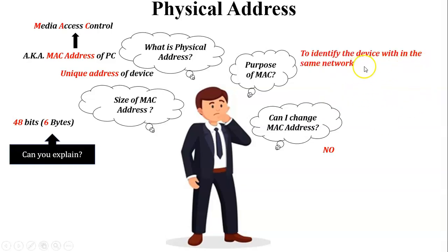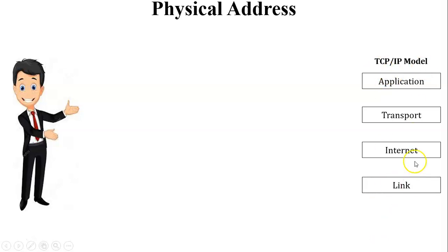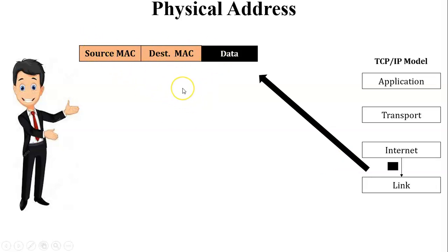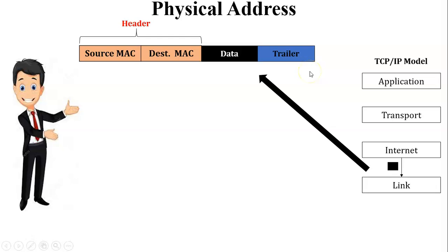What is the purpose of the MAC address? The purpose of the MAC address is to identify a device within the same network. If both devices are on different networks, we cannot use the MAC address. In the TCP/IP model, when data passes from the internet layer to the link layer, at the link layer the source MAC and destination MAC are added as a header before the data. Inside the trailer, flow control bits, error control bits, and access control bits are added, as these are the functionalities of the link layer.